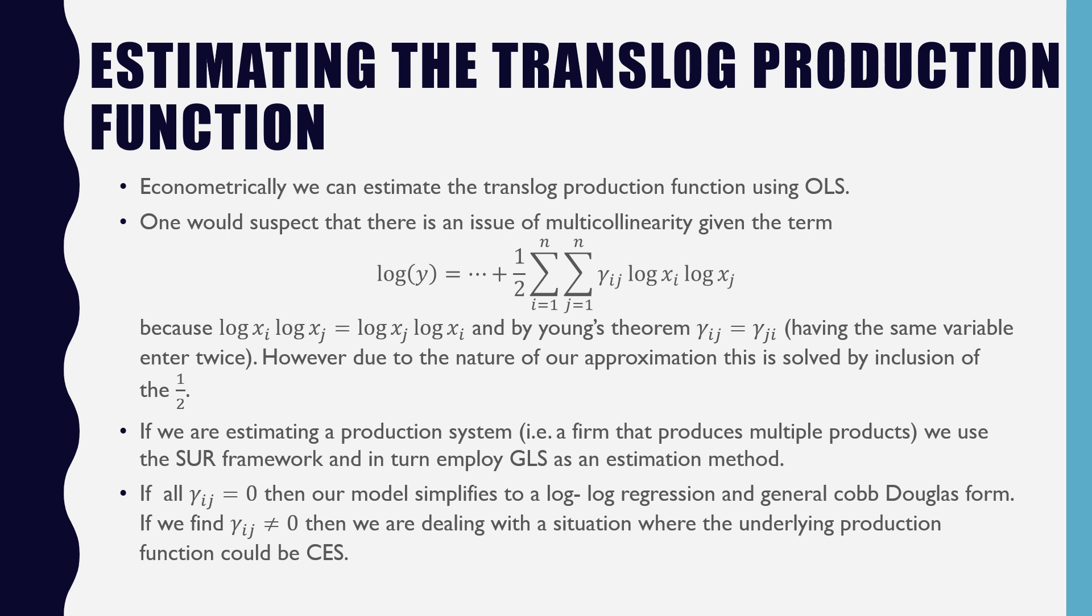The i's go from 1 to n, because log xi log xj equals log xj log xi, and by Young's theorem, gamma ij equals gamma ji. We're basically having the same variable enter twice, which is problematic.